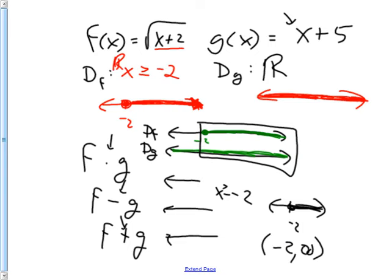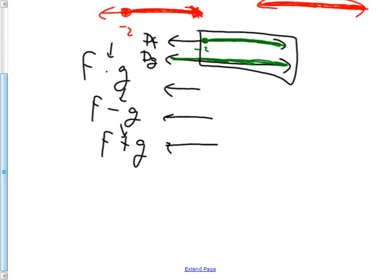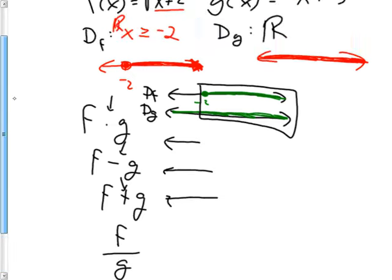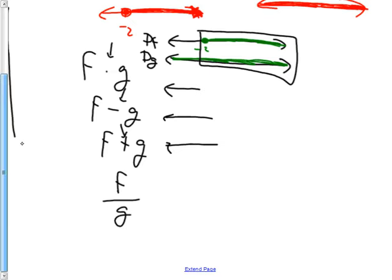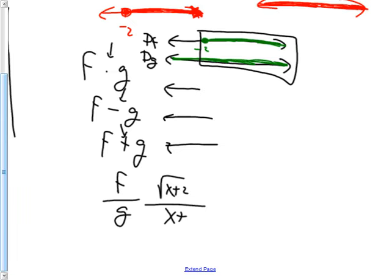In interval notation, the domain is [−2, ∞), with a bracket on the negative two. Now here are the hardest two kinds. What if we had f divided by g — f over g? The f function is √(x+2) and the g function is x+5, so the combined function is √(x+2) over (x+5). What's its domain?